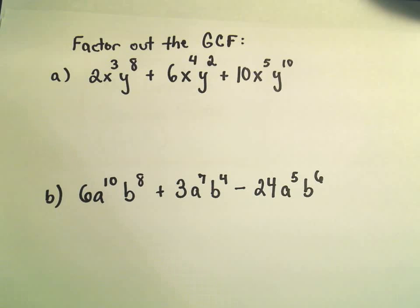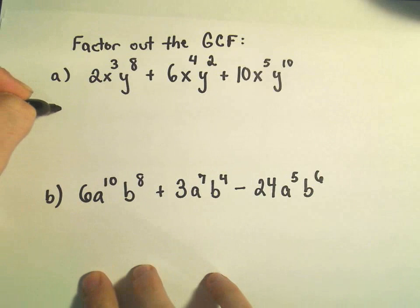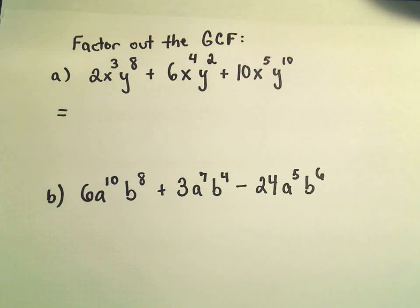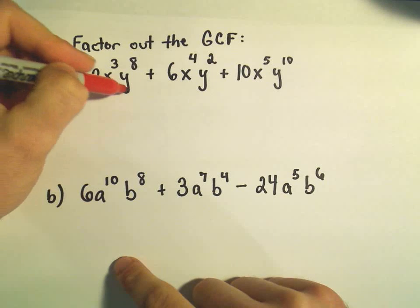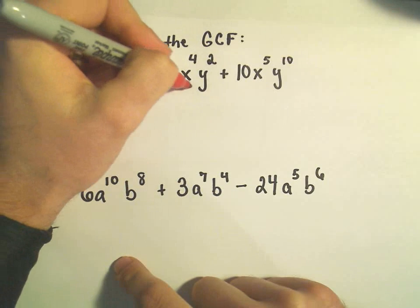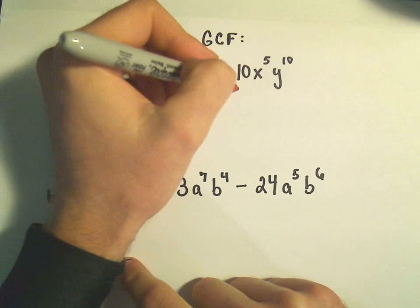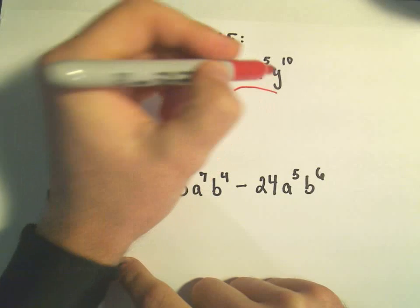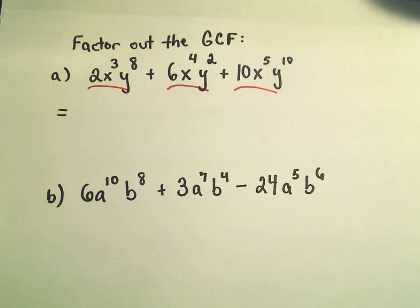Basically to do this, the first thing is I see that in my first example there are three terms. I see the 2x cubed y to the 8th, 6x to the 4th y squared, and then the 10x to the 5th y to the 10th.